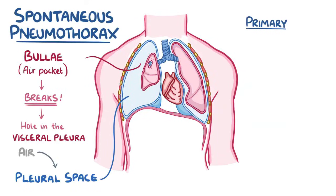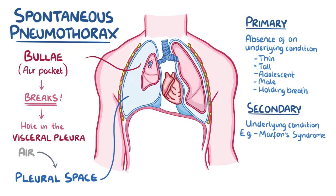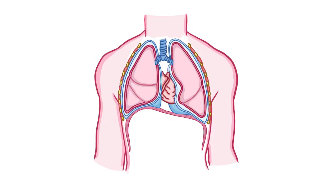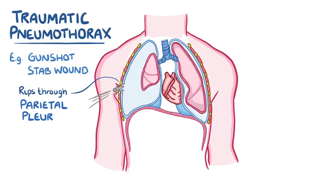A primary spontaneous pneumothorax develops in the absence of an underlying condition — most typically in a thin, tall adolescent male holding his breath, creating a lot of internal pressure. A secondary spontaneous pneumothorax develops in someone with an underlying lung disease like Marfan syndrome, cystic fibrosis, emphysema, or lung cancer. In contrast, a traumatic pneumothorax is when trauma — like a gunshot wound or stab wound — rips through the parietal pleura, allowing air to enter from the outside directly into the pleural space.